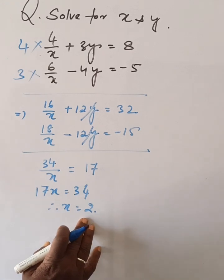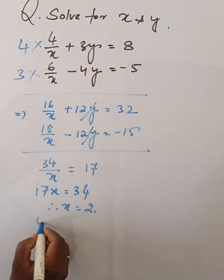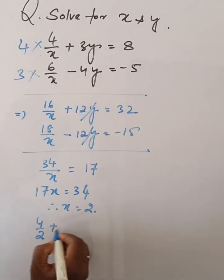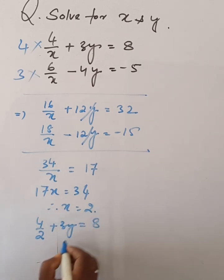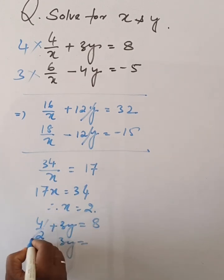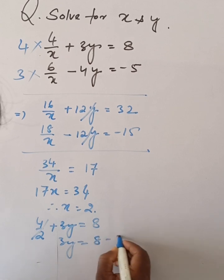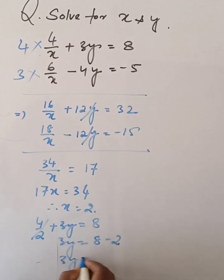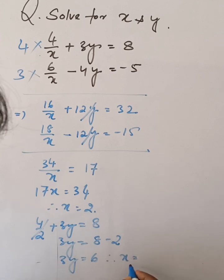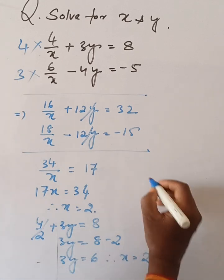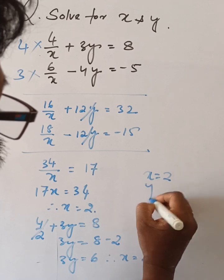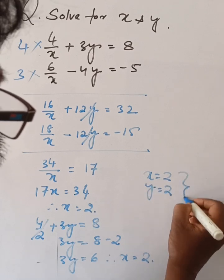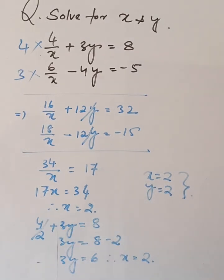Keeping this value in equation 1, that is 4 by 2 plus 3y is equal to 8. So 3y is equal to 8 minus 2, giving 3y is equal to 6, therefore y is equal to 2. x is equal to 2, y is equal to 2 are the answers.